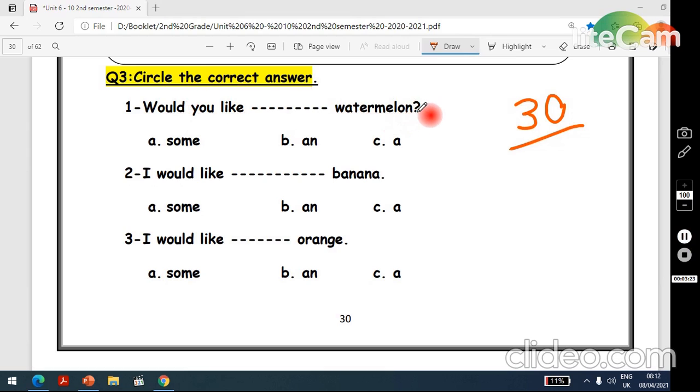Now page 30, circle the correct answer. What do you like? Watermelon. Here we have one watermelon. Some, an, or a? Yes, a watermelon. Watermelon. I would like banana. Some, an, or a? Yes, a banana. Here we have one banana and it starts with a consonant, the same with watermelon.